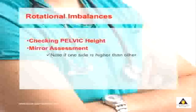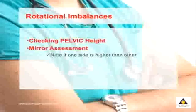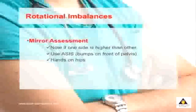The first test is very simple — all you're doing is looking at your pelvic height. Look in a mirror and note if one side of your pelvis is higher than the other. There are two landmarks you can use: the first is what's called the ASIS, which are the bumps on the front of your pelvis, or alternatively you can just place your hands on top of your hips. One side of your pelvis will be higher than the other, and this creates what's called a rotational imbalance.